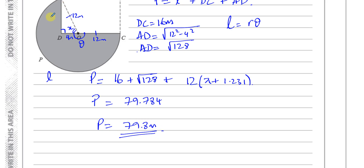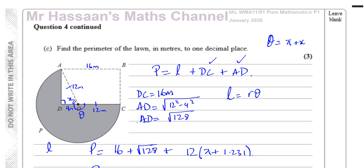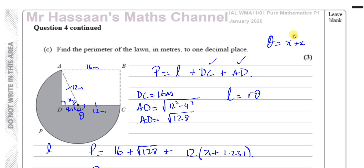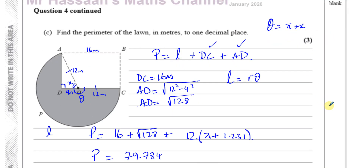That's the perimeter — the length of the outline of the shape. And there we have question number four completed. Thank you for watching. I've put the playlist for this January 2020 paper and the radian measure topic in the links. You can subscribe by clicking the icon on screen.